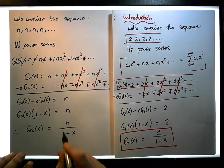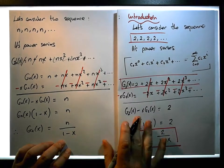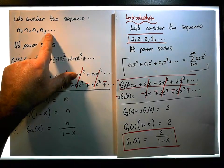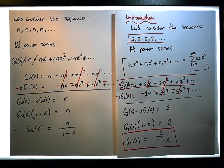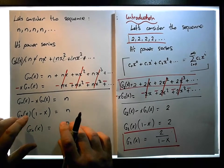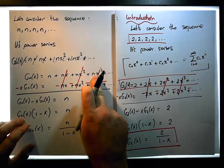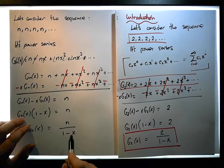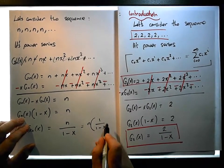So in general, you can see that the generating function for a constant sequence is effectively just a constant divided by (1 minus x). The generating function for this particular power series is just n times 1 over (1 minus x).